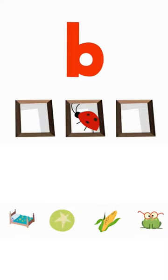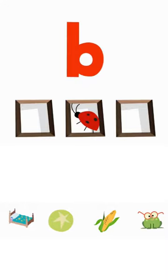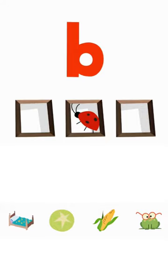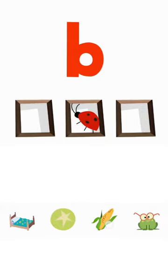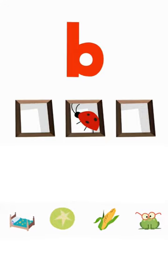Drag the things that start with the B sound to the boxes. Bed. Ball. Corn. Frog.